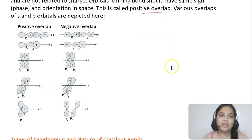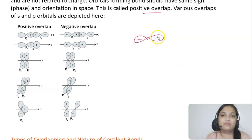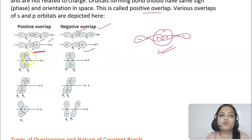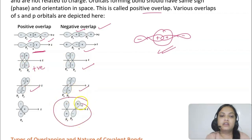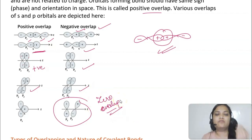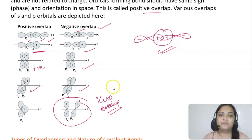For a pz orbital with plus and minus phases, if plus overlaps with plus it is positive overlap, and if plus overlaps with minus it is negative overlap. This applies to pz–s overlap (positive when same phase) and p–p overlap (positive when both lobes match in sign). Zero overlap occurs when two orbitals are oriented in different directions, such as px and py, which will not overlap with each other. Px overlaps only with px, and py only with py.